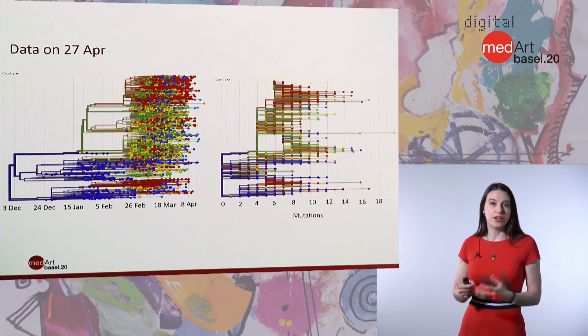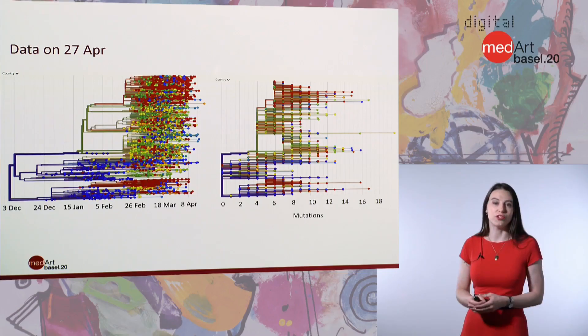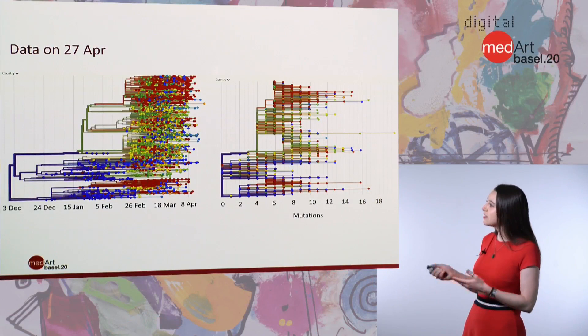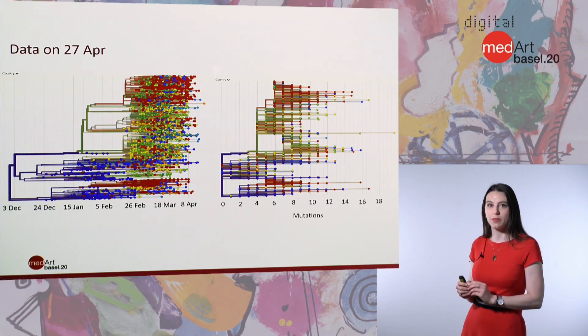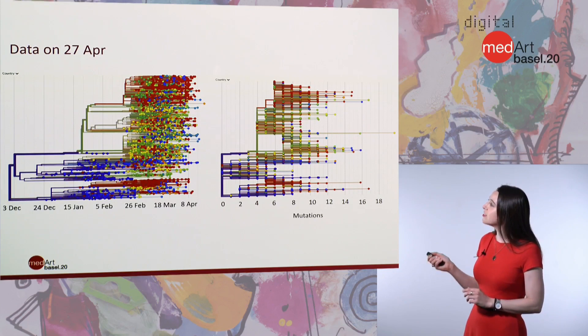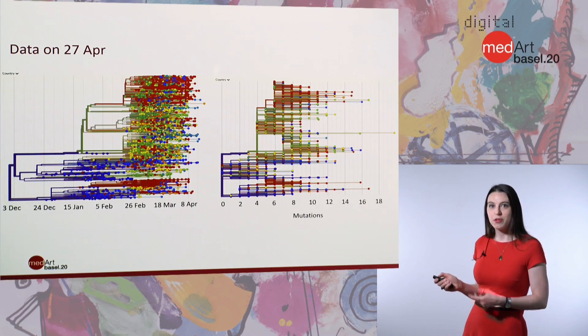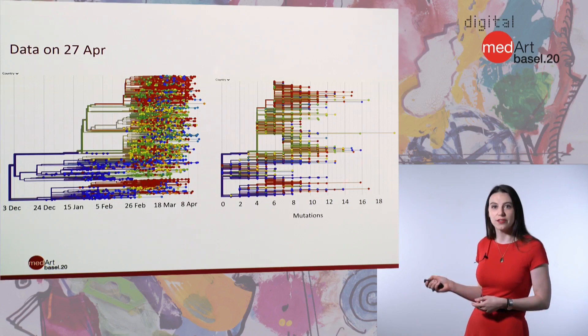This is the current Nextstrain build for the 27th of April for SARS-CoV-2 viruses. This shows two views of the same tree. On one side we have a time-resolved tree, where samples are plotted by their collection date — the x-axis is essentially a calendar, with lines showing how the samples are related. On the other side, we have a divergence view, showing viruses related only by what mutations they share. It may look like there are fewer samples, but it's because many are identical and fall on top of each other.